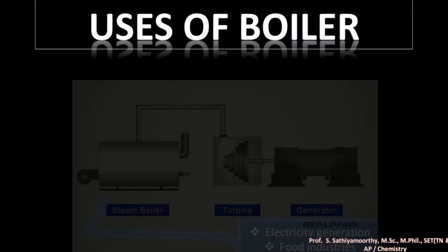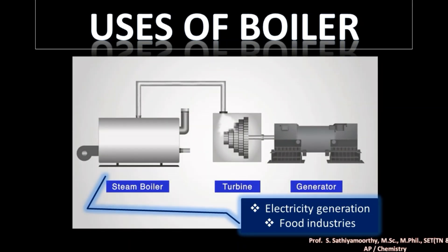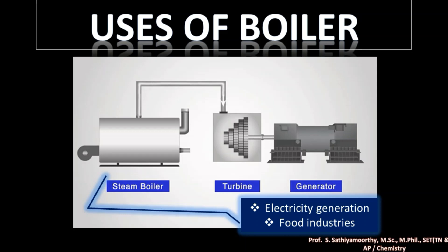Boilers are used mostly in electricity generation — for example, in thermal power plants, nuclear power plants, naphtha-powered power plants, and kerosene-powered power plants. Everywhere they produce steam in large quantities. The steam produced is passed over a turbine, which is made to rotate. The rotating turbine is connected with a metallic conductor rotated inside a strong permanent magnet, and as a result electricity is generated.